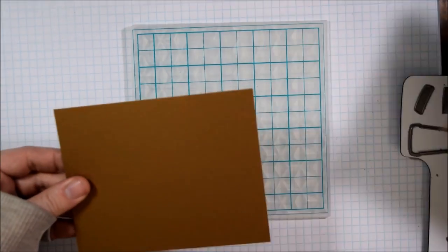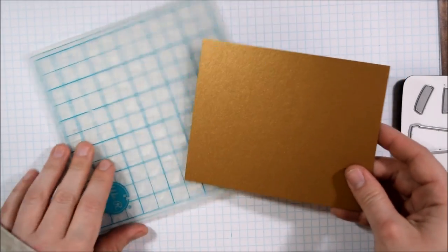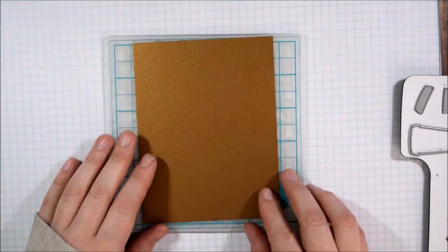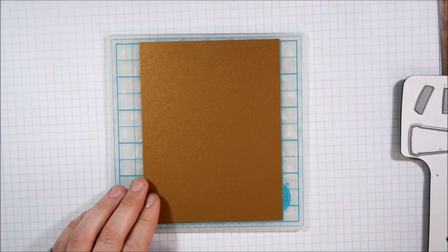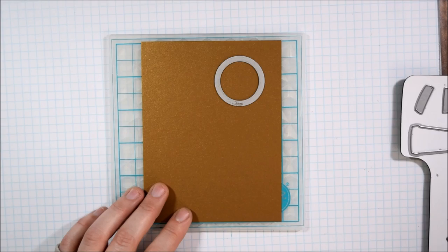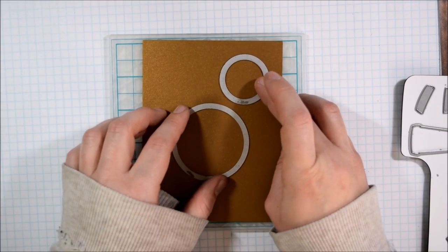I thought that this would be a gorgeous set to do some gold embossing with, and to pair my gold embossing I have this shiny gold paper from the Paper Source and I'm going to be doing some die cutting and dry embossing with it.